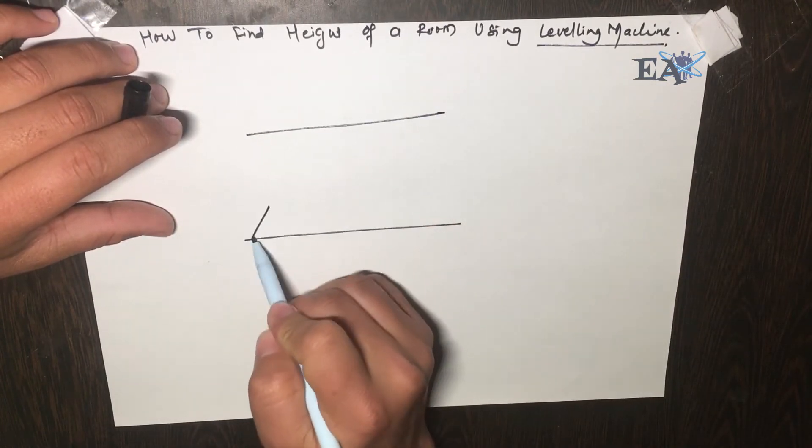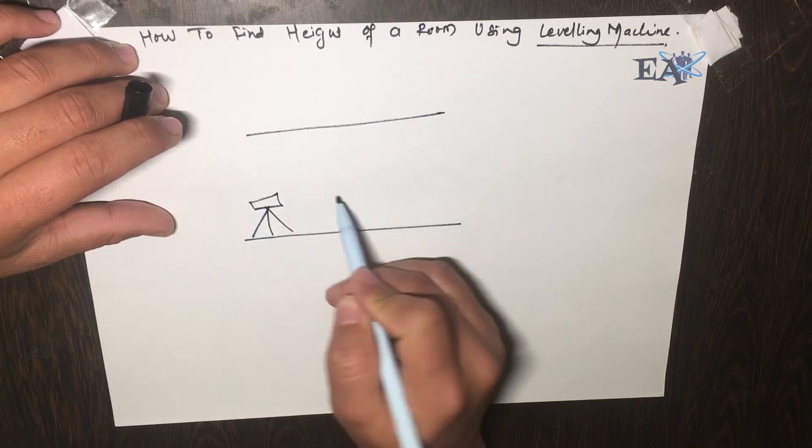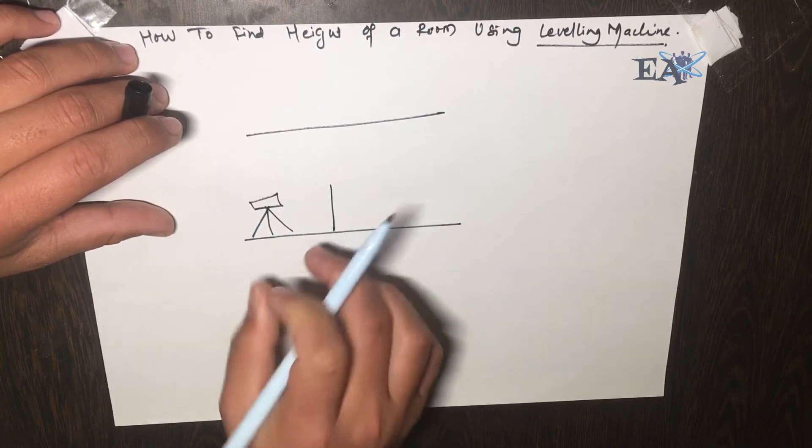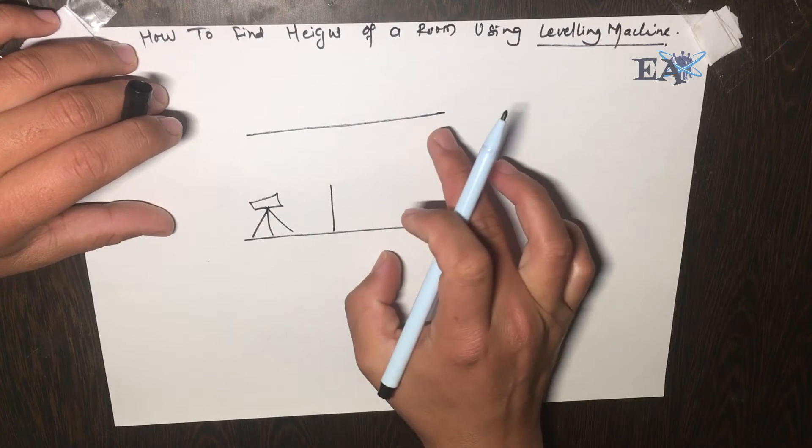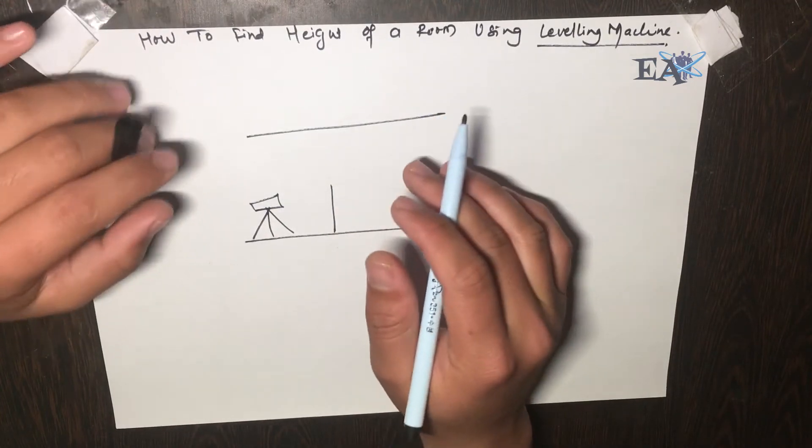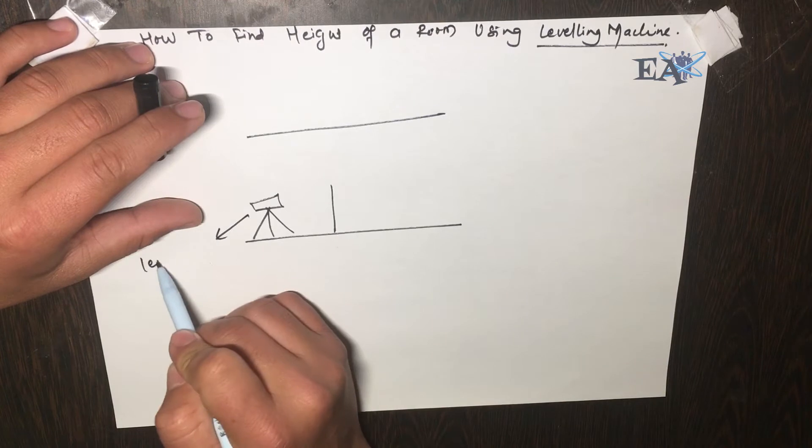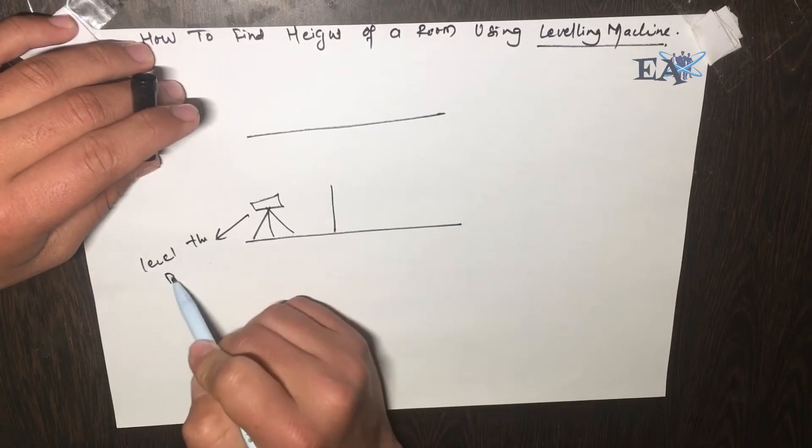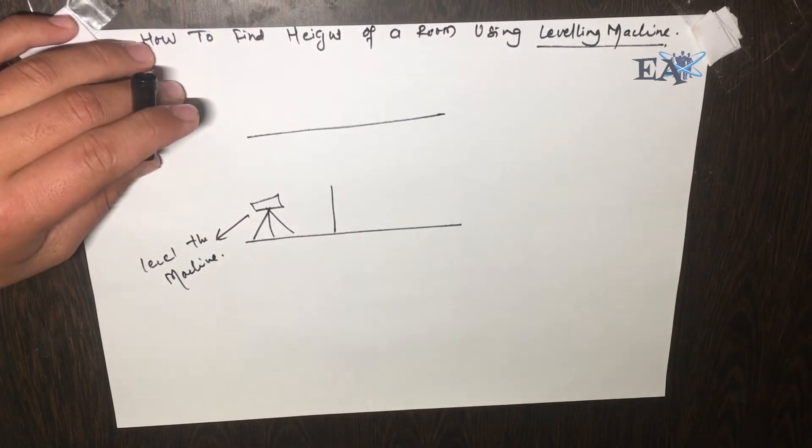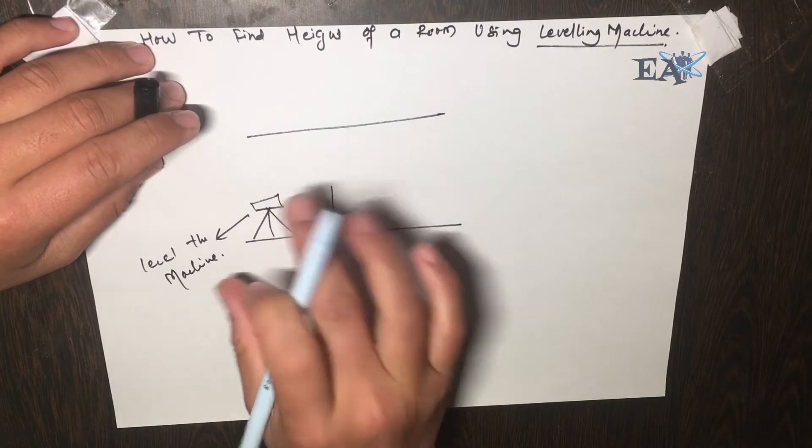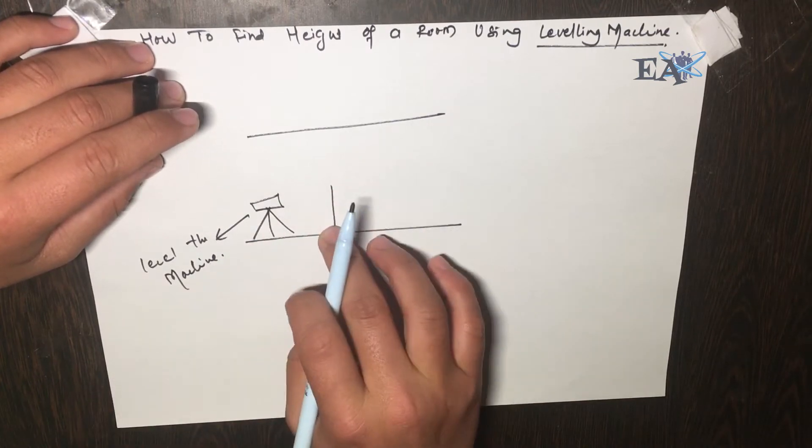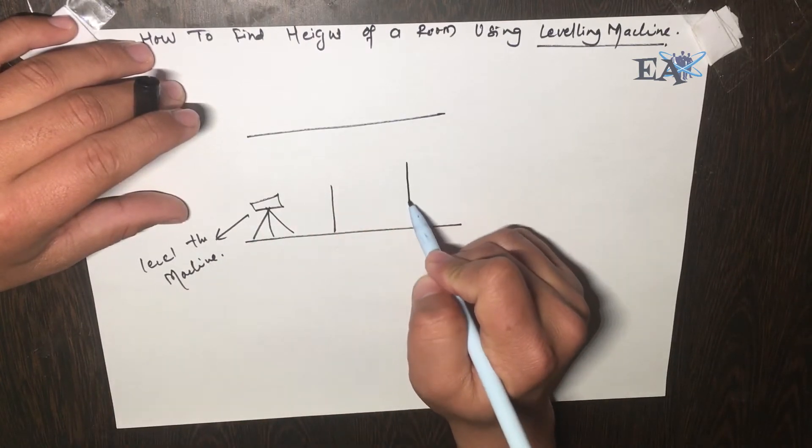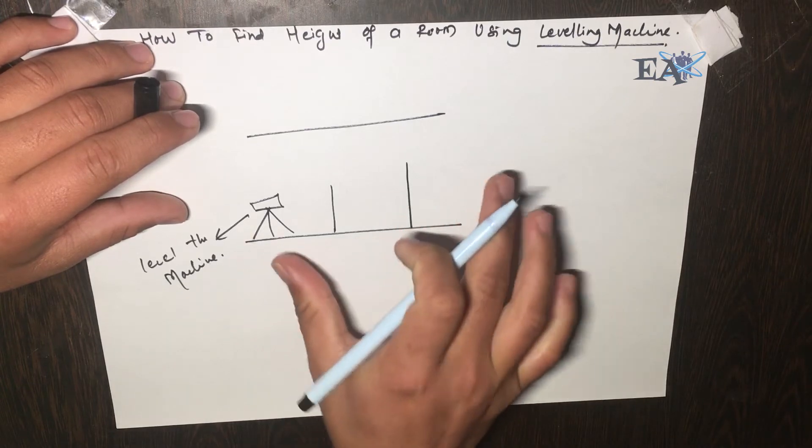Suppose you have a room and you're provided with a leveling machine and a staff. Using these two things you have to find the height of this room. First thing you have to do is properly level your machine. Fix the machine at one place and level it.